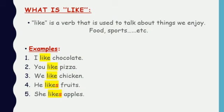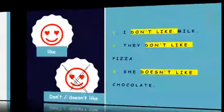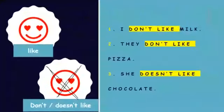Here are some examples: I like chocolate, you like pizza, we like chicken, he likes fruits, she likes apples. As you can see, the verb 'like' is conjugated in the present simple affirmative form, and we added an 's' for he and she.